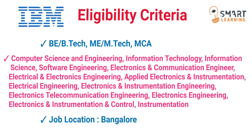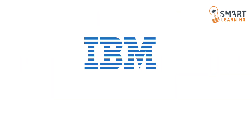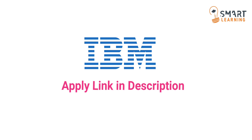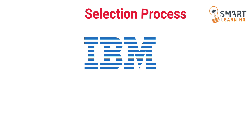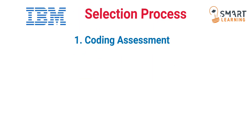I am providing the apply link in the description, so apply as soon as possible. Coming to the selection process for IBM — once you are eligible and submit the application form, you will get a mail related to the first round, which is the coding assessment. The platform is HackerRank for this coding assessment, and they will give only one coding question with a time limit of 30 minutes.